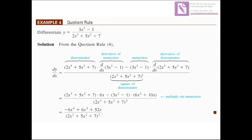Example 4: Differentiate y = (3x² − 1) / (2x³ + 5x² + 7) using the quotient rule. The structure is: (2x³ + 5x² + 7) times the derivative of (3x² − 1), minus (3x² − 1) times the derivative of (2x³ + 5x² + 7), all divided by the square of the denominator. The denominator remains as is; we only differentiate the numerator first.